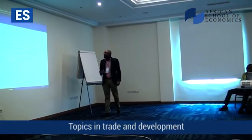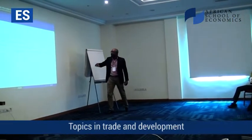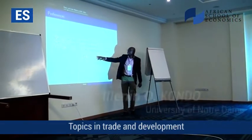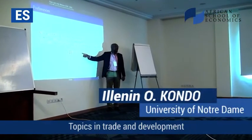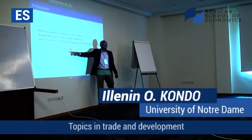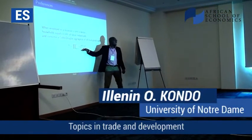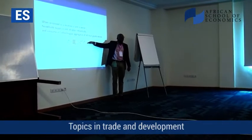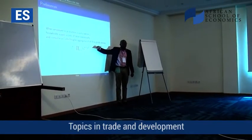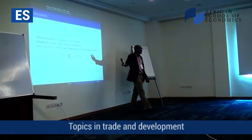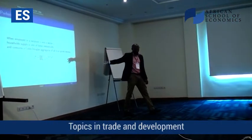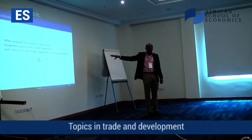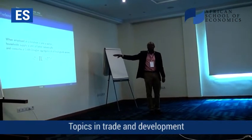So essentially you're going to have K sectors that are going to be CoDouglas aggregated into a composite group — nothing fancy here, it's just a CoDouglas across K sectors. That means that essentially your spending shares are going to be constant. So that's not where the action is; that's just a convenient way to map things back.